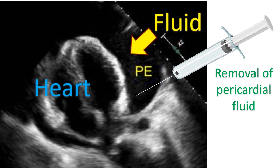Sometimes the collection of fluid can be due to bleeding into the pericardial cavity. This occurs most commonly in cancer — malignant pericardial effusion. Usually it is cancer of other organs spreading to the pericardium, which is secondary, rather than primary cancer of the pericardium, which is very rare — mesothelioma.